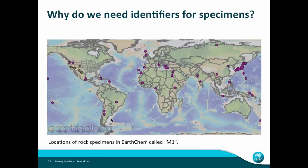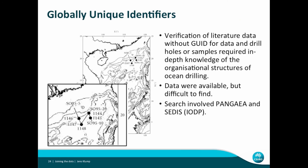Until recently there was no standard way to access information about specimens — very few online repository catalogues, very few disciplinary catalogues, and metadata found in publications is incomplete. To illustrate: this map shows the locations of rock specimens in the EarthChem database called 'M1.' M1 is globally distributed, with a certain fondness for it in Japan, and in terms of rock type, M1 is anything. So M1 is clearly not a useful name — if you find it in the literature, it doesn't get you anywhere.